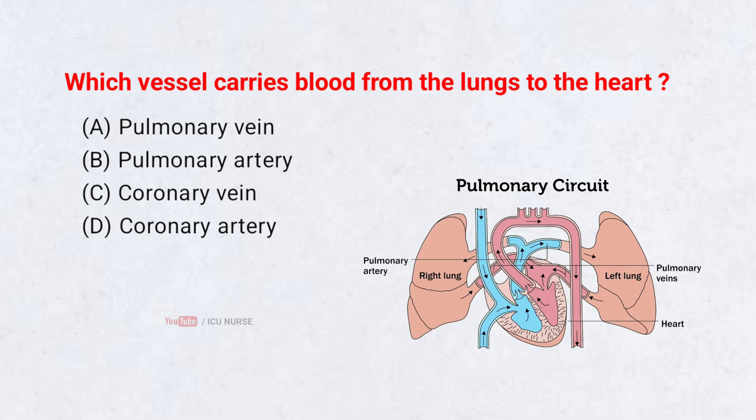Which vessel carries blood from the lungs to the heart? Correct answer A: Pulmonary vein.